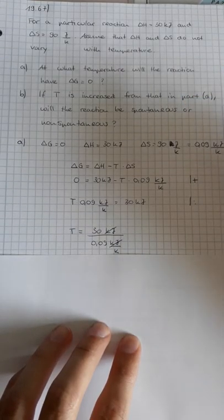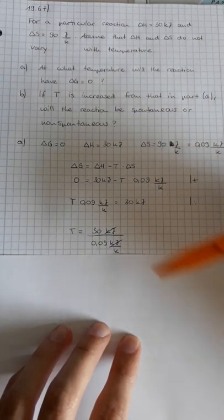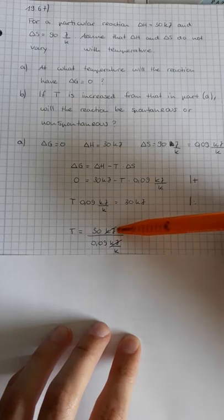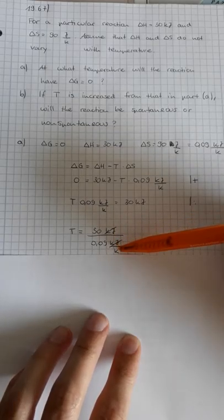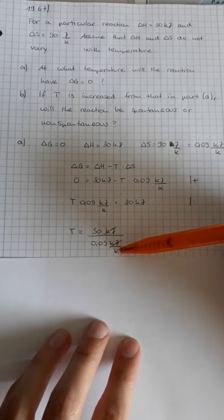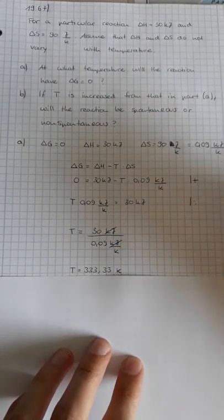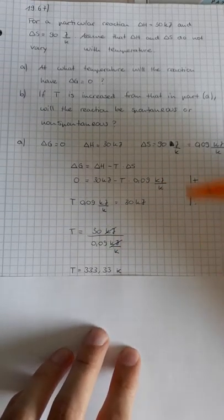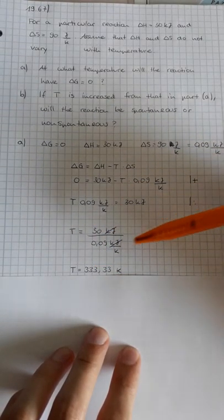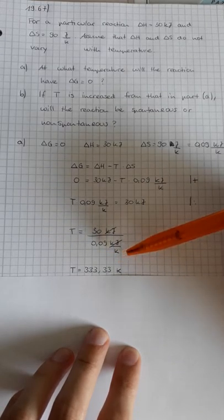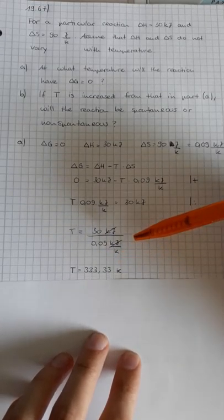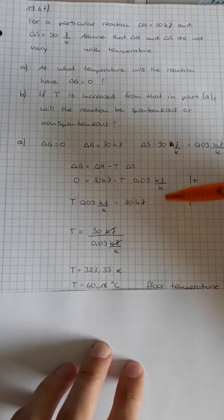We got this term and we see that we can reduce the units, so we only got kelvin. And that would be also the end of task A because we got a temperature of 333.33 kelvin or 60.18 degrees.